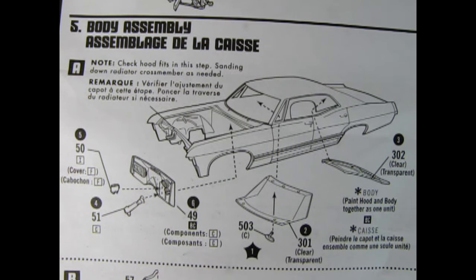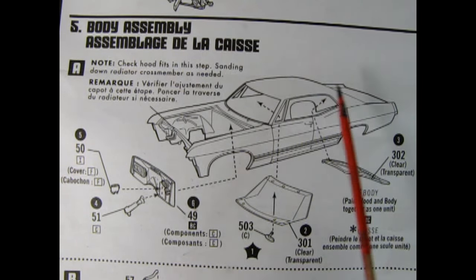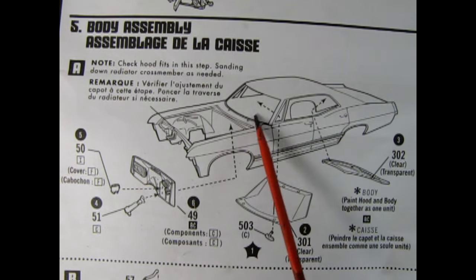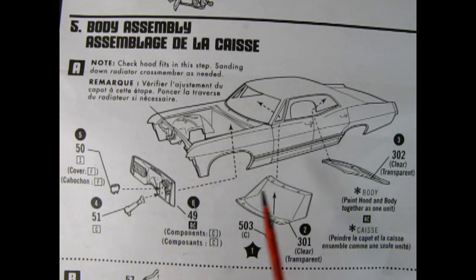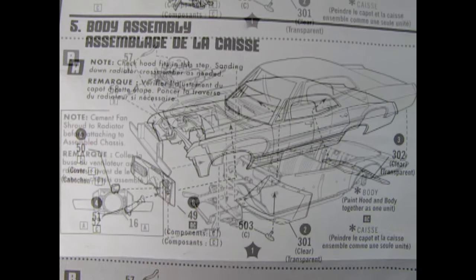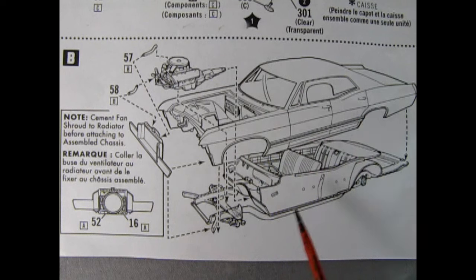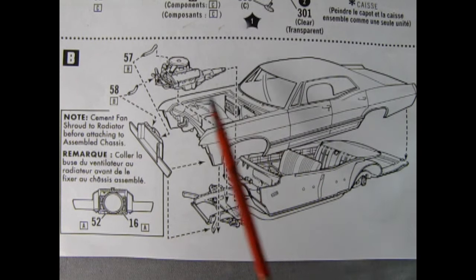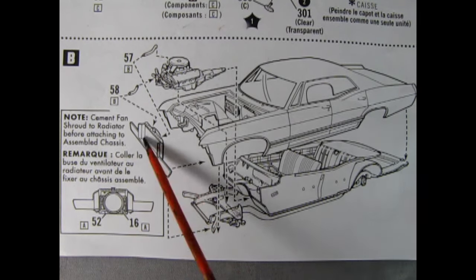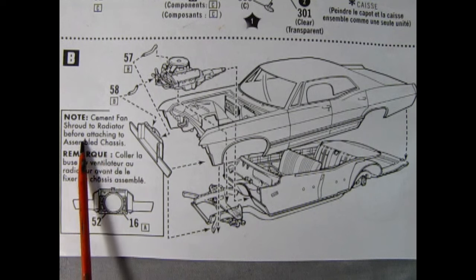Step five, body assembly. Here we have the body assembly. The rear window gets glued in the back, the front window gets glued up in the front. There are some location holes as well as our rear view mirror which gets glued in place. We have the firewall here and the front steering column as well as the brake booster. In step B, we add the body to the chassis and frame. Then we drop in our engine, install the lower and upper radiator hoses to the radiator shroud. There's a note: cement fan shroud to radiator before attaching to assembly chassis.